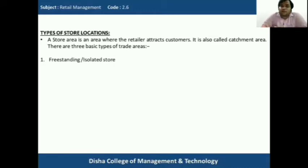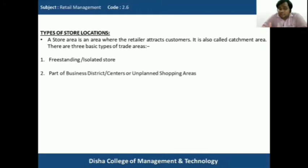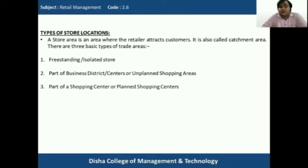A freestanding or isolated store is a standalone store standing in solitude — also known as a solitary store. The second type is part of a business district or center, also known as unplanned shopping areas, which developed over time without being planned. The third is part of a planned shopping center, which is specially designed to attract customers. We will understand all three types one by one.